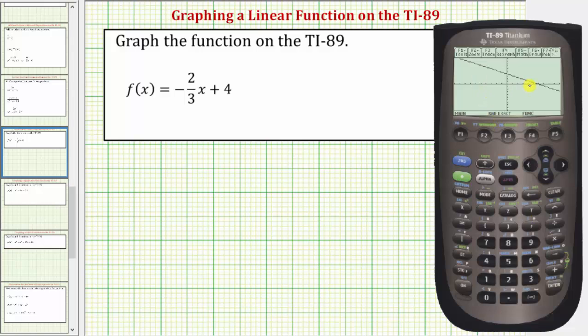If we knew we already had the standard window, which is from negative 10 to positive 10 along the horizontal and vertical axes, we could have just pressed diamond F3 for graph. So here we see the graph of the line.